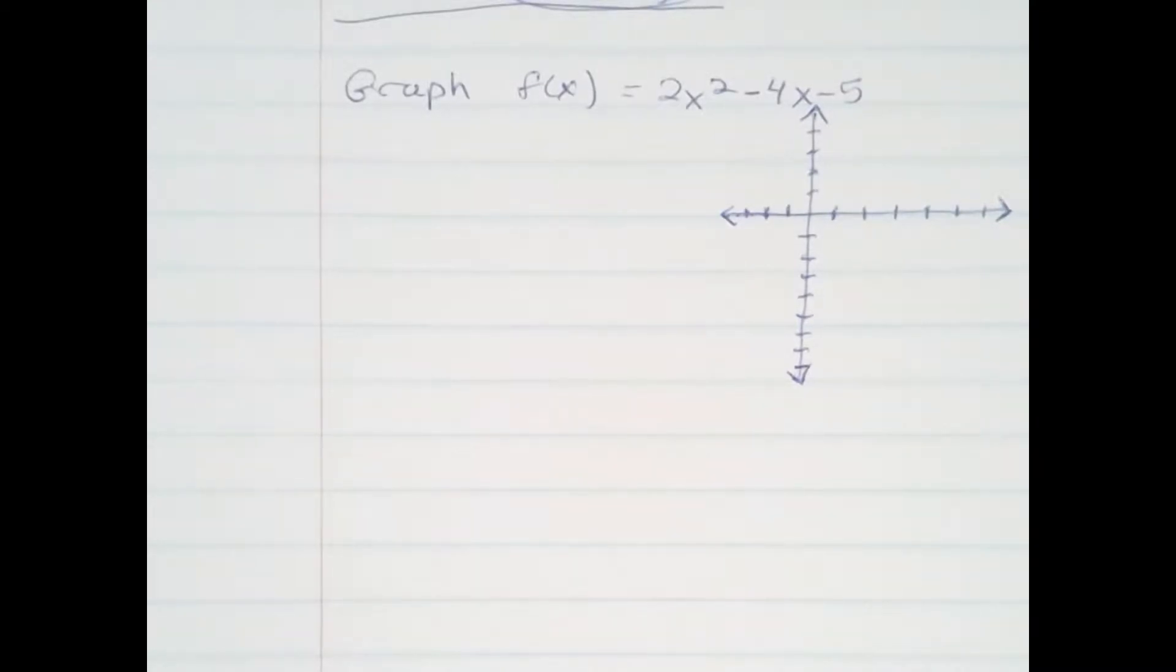Here we're going to graph the function f(x) = 2x² - 4x - 5. We're going to start with the vertex, and the vertex is x = -b/2a.